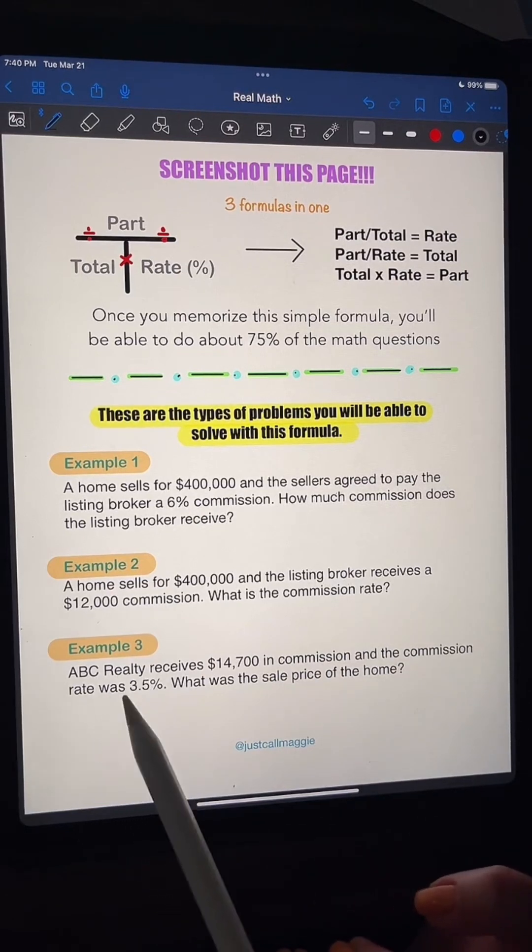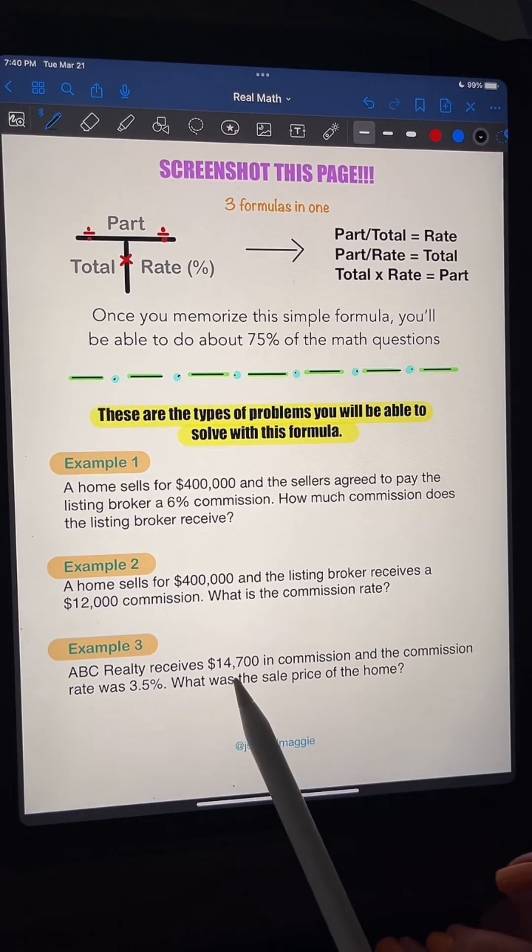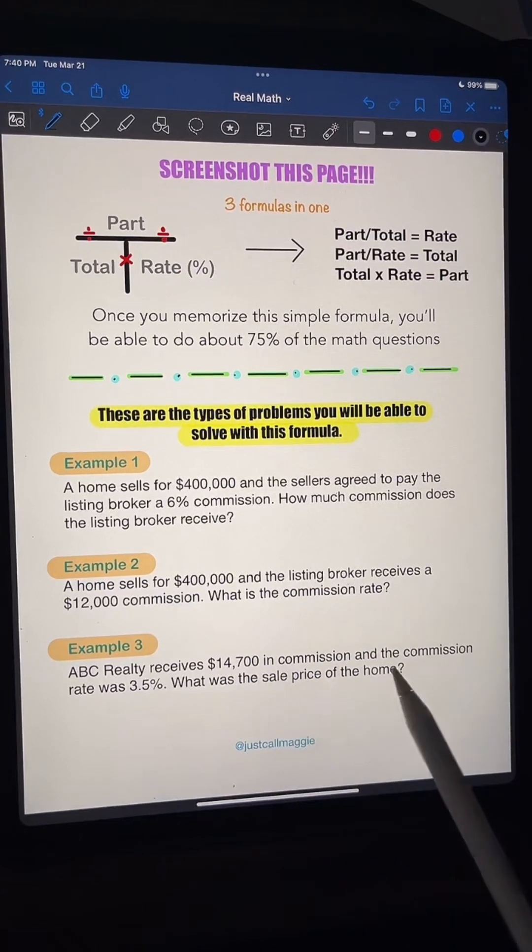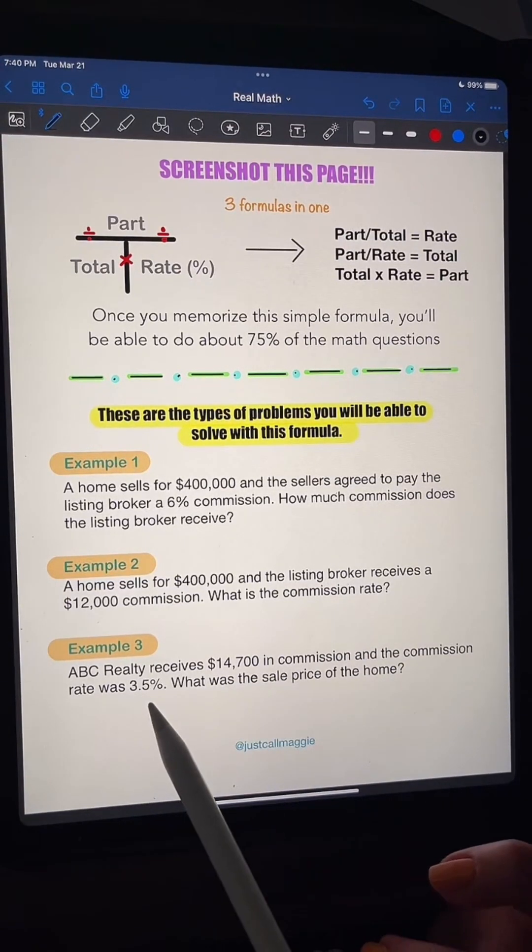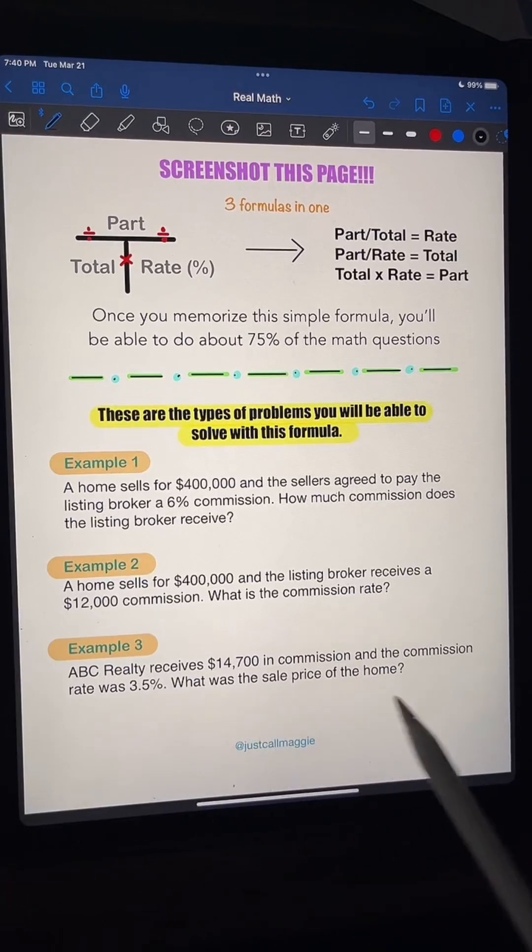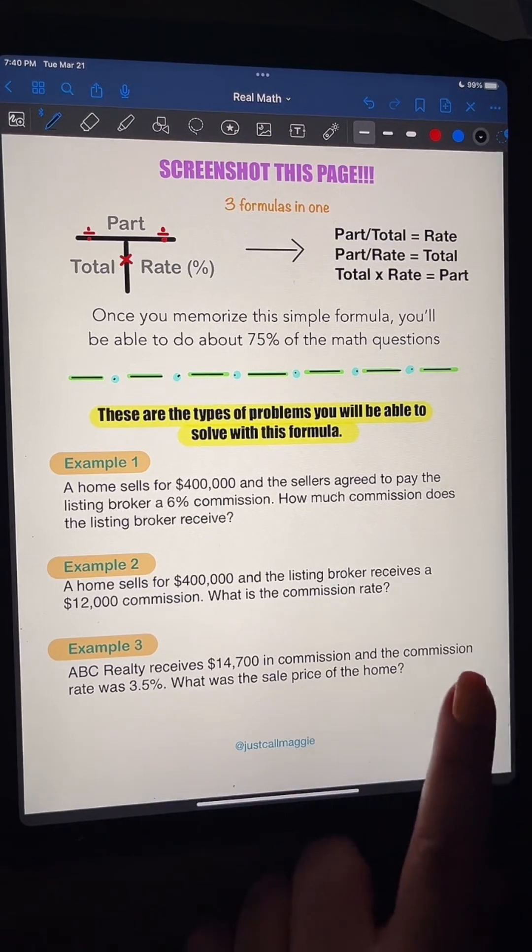Example three has ABC Realty receives $14,700 in commission, and the commission rate was 3.5%. What was the sale price of the home? Okay? If you guys have taken the state exam, you know that this is on there. Okay? So let's go into this. We're going to do it step by step, each one of these three problems. Okay? Are we ready to go? So let's do it.